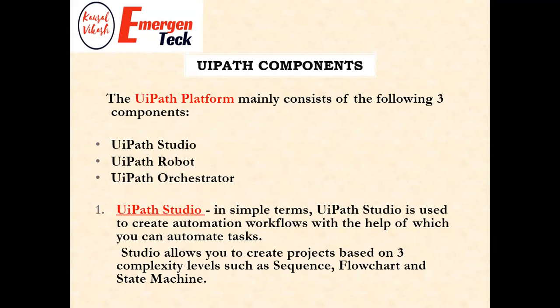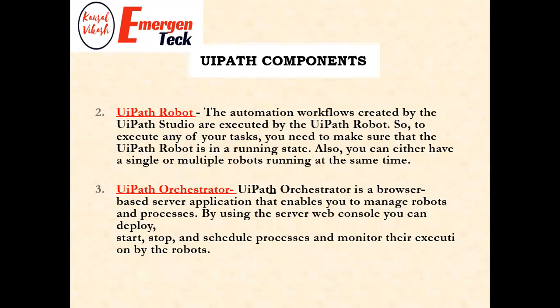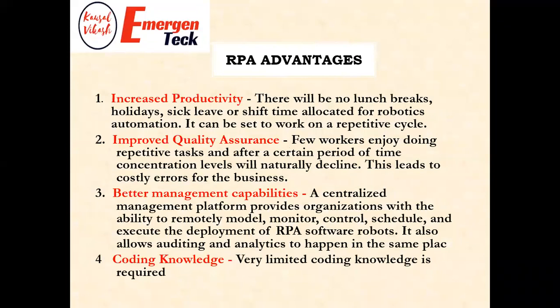There are three components of UiPath you should learn: UiPath Studio, UiPath Robot, and UiPath Orchestrator. UiPath Studio is used to build automated processes. UiPath Robot executes the automation we have built. UiPath Orchestrator is a cloud-based platform from which we can monitor processes, merge code, securely store credentials, and schedule processes — all management activities.